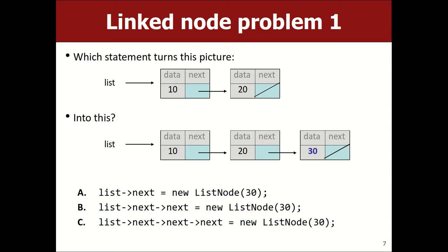`list` is a pointer — these colored boxes are the actual objects. The pointer points to the first object, and that object's next pointer points to the second. So the first object is just `list` via the arrow operator. If I want to print the 10, I say `list->data`. To get to the 20, I say `list->next->data` — the arrow operator walks you forward, not the `next` keyword itself.